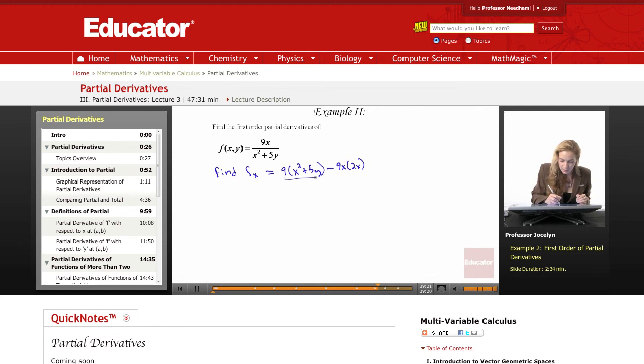We're simplifying, this will give us negative 9x squared plus 45y over the denominator of x squared plus 5y quantity squared. We're not asked to evaluate it at a point in this particular problem, so our partial derivative, that would be the answer for questions of this form.